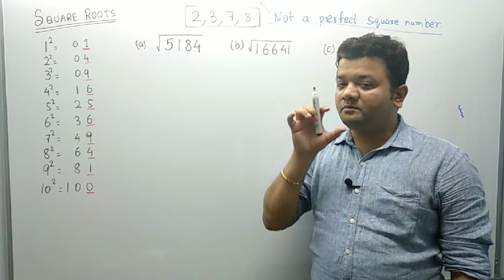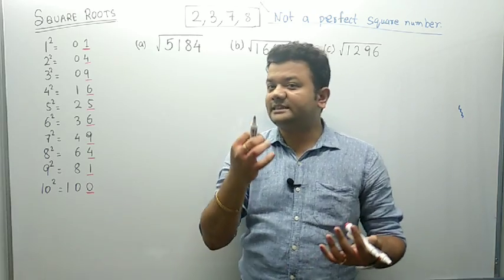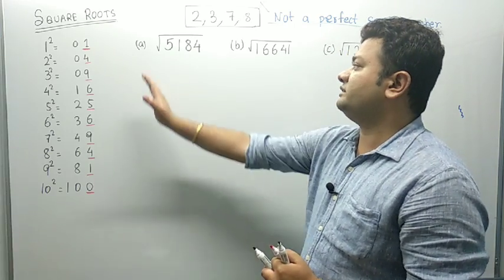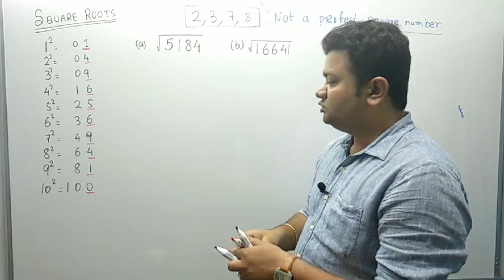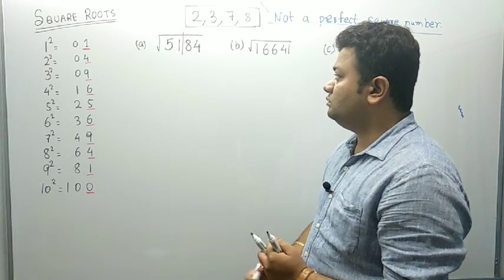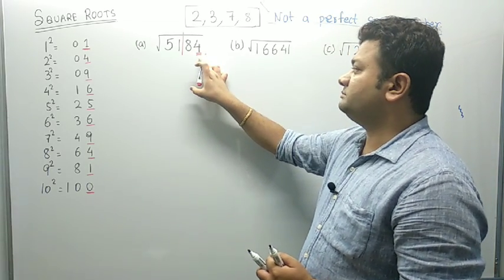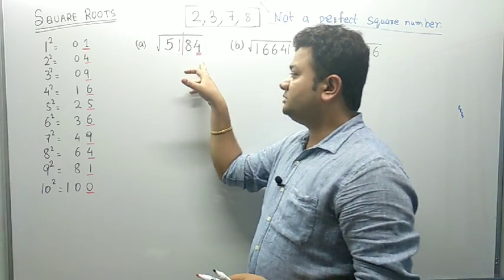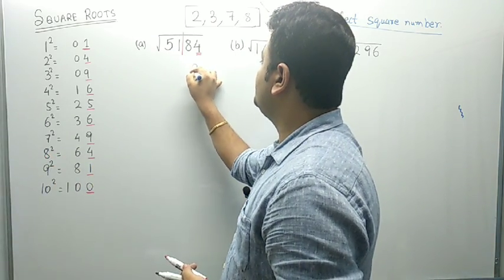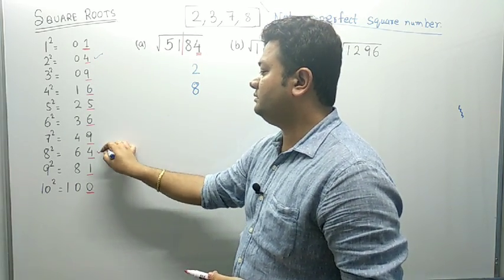Now how will we calculate square root for perfect square numbers? I have written here 3 different numbers and these numbers are going to explain 3 different conditions. Let's look at the first number: 5184. Straight away, go to the right-hand side of this number and select 2 places from the right — that gives us 84. In 84, the unit space is occupied by 4. Since unit space 4 comes in the square of 2 as well as in the square of 8, I write here 2 and 8.